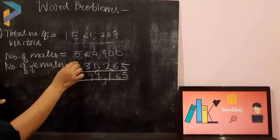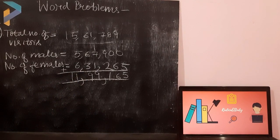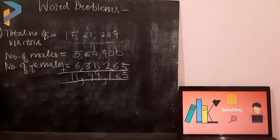6 plus 3, 9. 5 plus 6 is 11. So, total number of males and females were 11,99,165. Now, to find out the value of number of children, what we have to do?